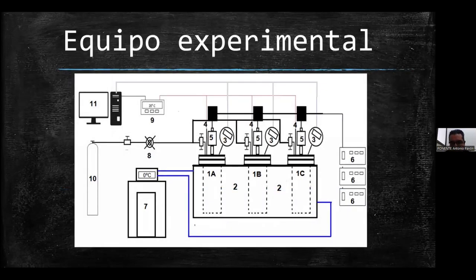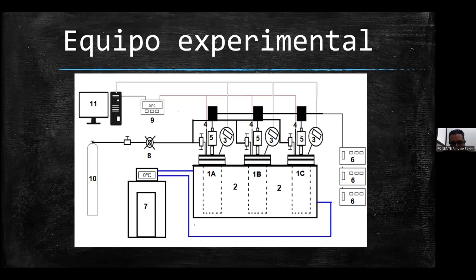El equipo experimental consta de tres celdas de equilibrio: 1A, 1B y 1C. Estas celdas cuentan con instrumentos de medición: manómetro y termómetro. Las celdas son sumergidas en un recipiente con un líquido refrigerante para aislar la temperatura, y esta es controlada mediante un recirculador. Las lecturas de presión y temperatura son archivadas en un ordenador mediante un programa de adquisición de datos hecho en un software de distribución.